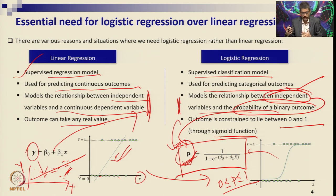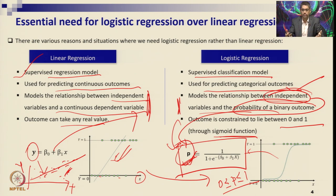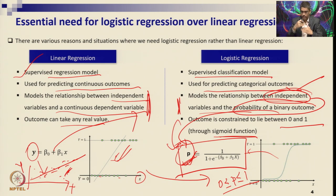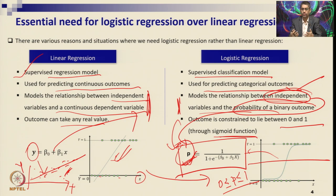The outcome will be classified as: hold the stock or sell the stock, person has died or survived, approve the loan or not. There will be probabilities in between — like 0.45 or 0.75. You put a cutoff point in the middle and classify the data or outcome into two categories — yes or no. This is called the basic logistic regression with binary outcome.